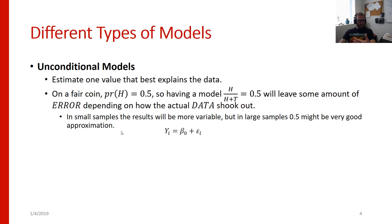And the simplest case for a model is what we would call an unconditional model. An unconditional model is going to estimate one value for every person. So it estimates one value that gives us the best explanation of the data. So for instance on a fair coin the probability of a chaining heads is about 0.5. 50% of the time we should get heads. 50% of the time we should get tails. So having a model that predicts the probability of heads equals 0.5 will leave some amount of error depending on how the data actually shook out. If I flip a coin 10 times on any individual flip I'm either going to have heads or tails. It's never going to be 0.5. It'll either be heads which would have it maybe be a 1 or tails which would be a 0.